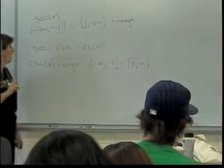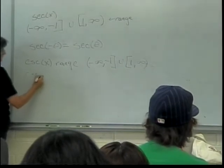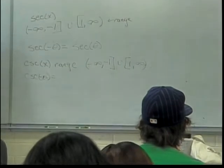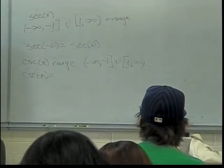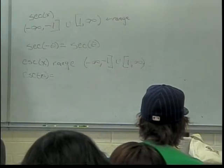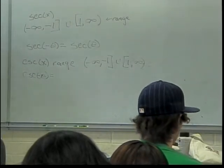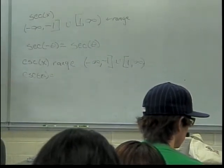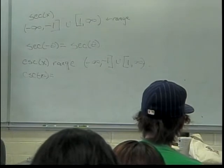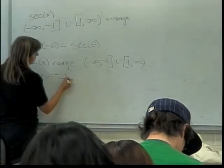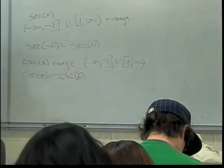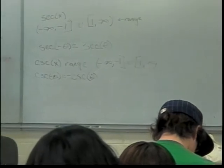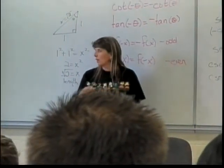Is cosecant even, odd, or neither? It's odd. If you rotate it 180 degrees, it maps onto itself. So the cosecant of negative x equals negative cosecant of theta — it's odd.